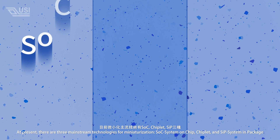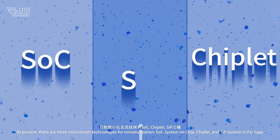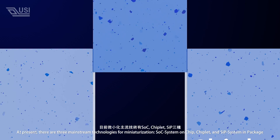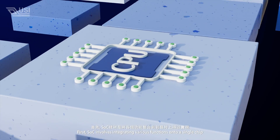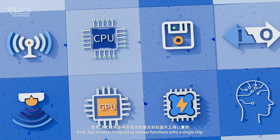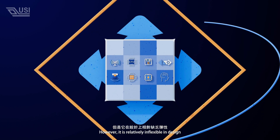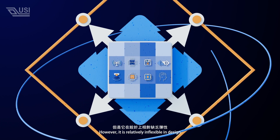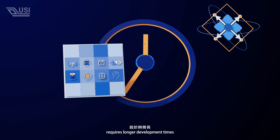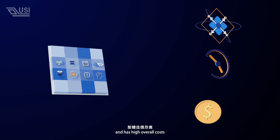The three technologies are: SOC (system on chip), chiplet, and SIP (system in package). First, SOC involves integrating various functions onto a single chip. However, it is relatively inflexible in design, requires longer development times, and has high overall costs.